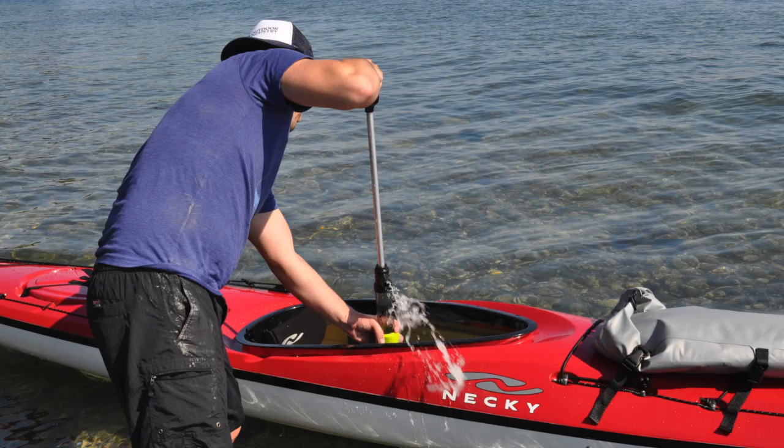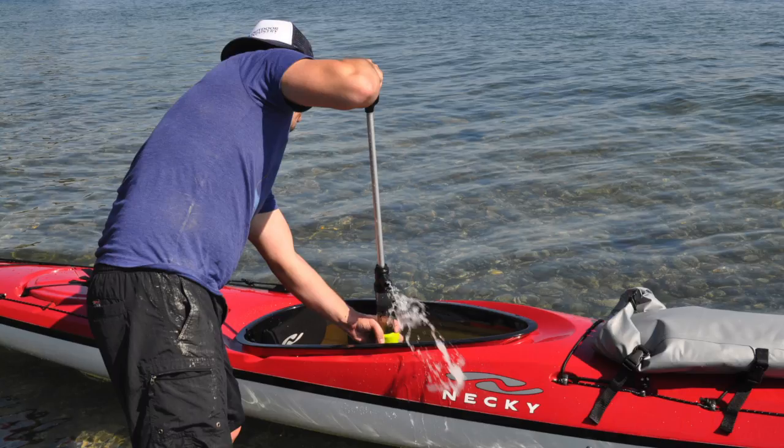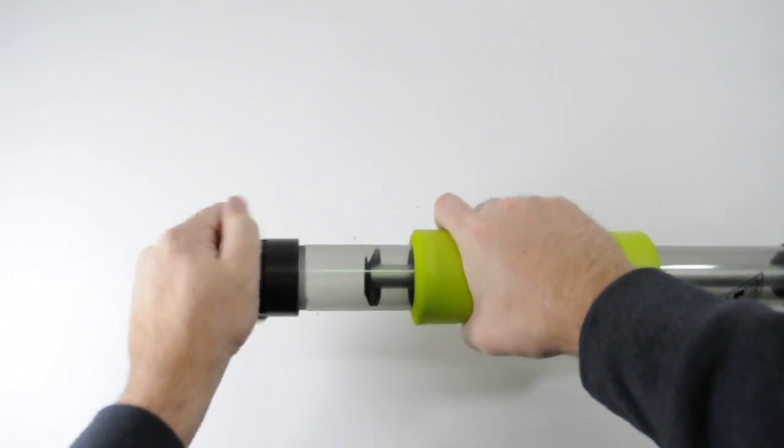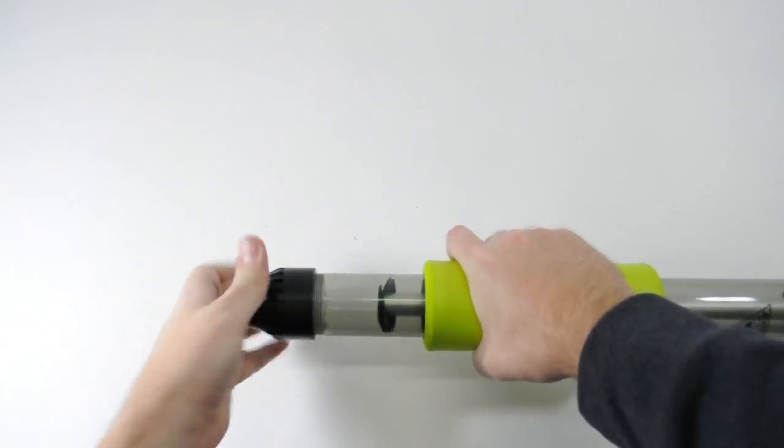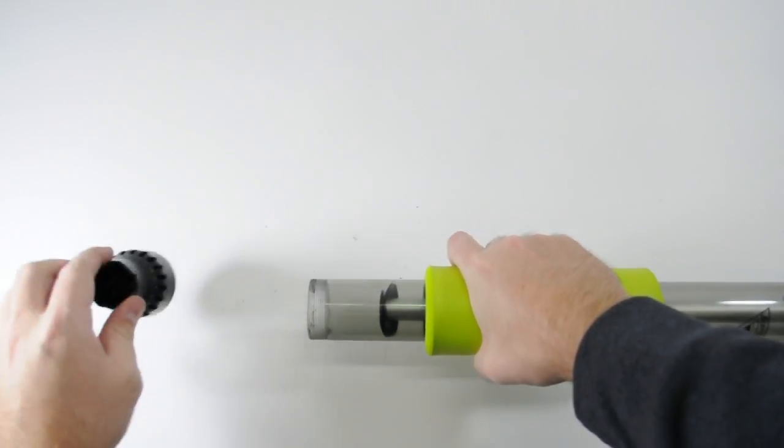When you are pumping water, you're more than likely going to get some debris in the pump chamber. The breakaway bilge pump allows you to simply unscrew the nozzle so you can dump out the chamber and remove any blockage.